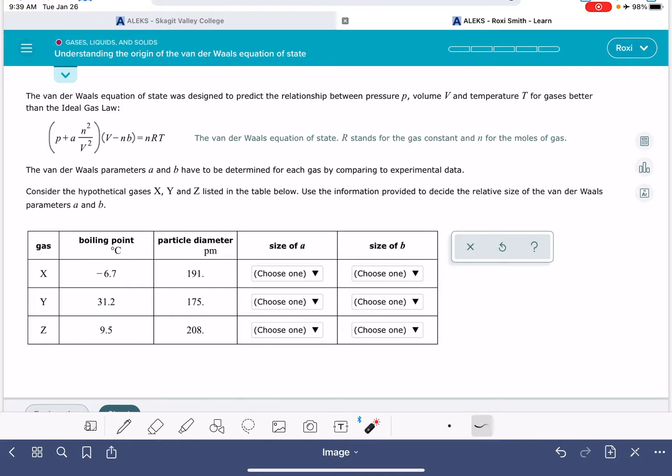This is giving us three different samples of gas, X, Y, and Z, and it's giving us the boiling point of the gas and then the diameter of the gas particles, and it's asking us to rank the relative size of the Van der Waals constant A and the Van der Waals constant B.